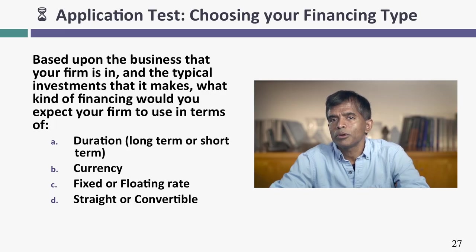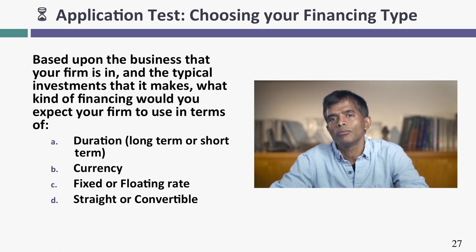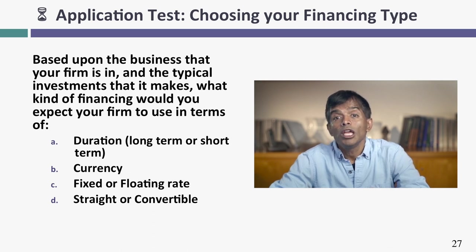Here's what I'd like you to try: take a company you're familiar with and see if you can design debt for that company. Think about whether you want the debt to be short-term or long-term, what currency you want the debt to be in, whether it should be fixed rate or floating rate, whether it should be straight or convertible. If you want to be creative, think about what features you'd like to add given what you know about the company. Once you do that, you're going to discover that designing the perfect debt is not that complicated. This really is not rocket science. Thank you very much for listening.